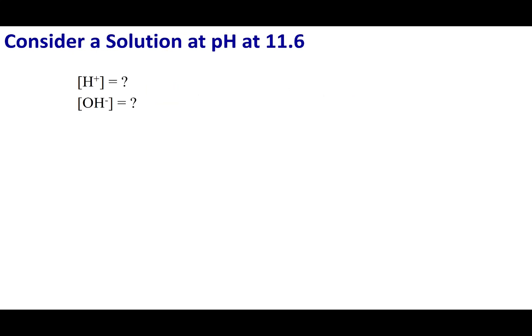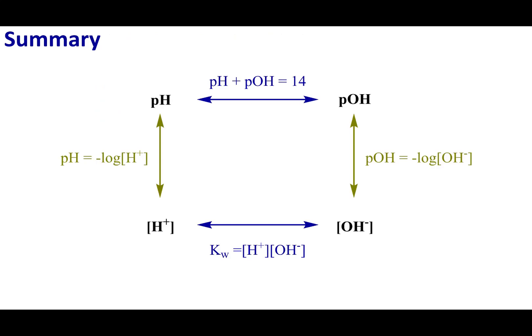With this said, what I want you to do is imagine I have a solution at pH 11.6. Go ahead and calculate the H plus concentration for me, the OH minus concentration for me. And to help you out, you might want to figure out the pOH. You can use the summary at the end of this lecture. Take a look at this slide and see how it can help you solve that problem.